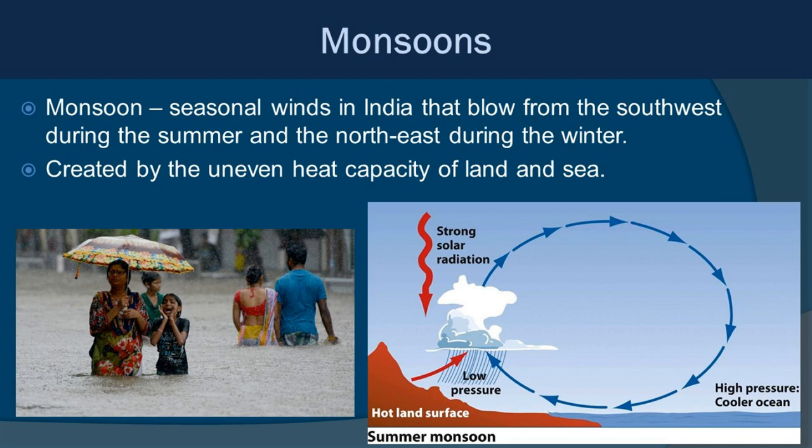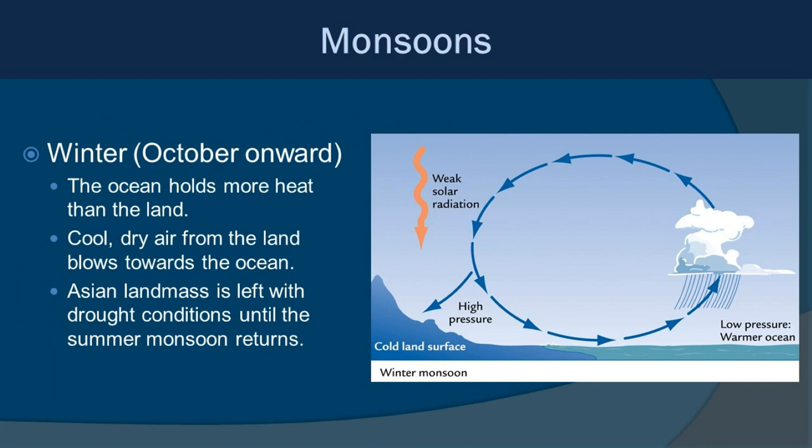As those onshore winds hit the mountains, they rise and dump all that precipitation, causing massive amounts of rain and flooding. In the winter, the ocean holds more heat than the land, causing a reversal where cool, dry air from the land blows towards the ocean. In this scenario, the Asian landmass is left with drought conditions that persist through the summer until the monsoons return. As you can imagine, having both floods and droughts annually causes problems for human populations, and they struggle with balancing all of this.